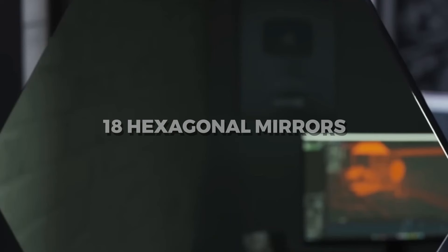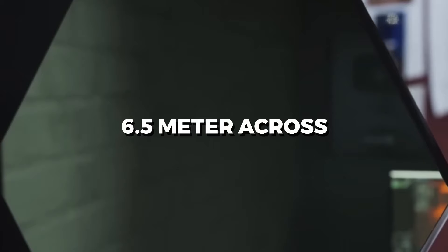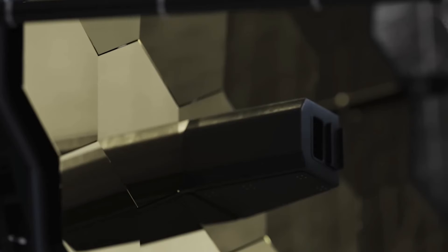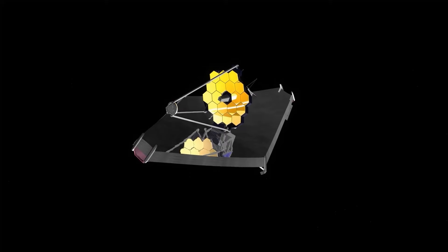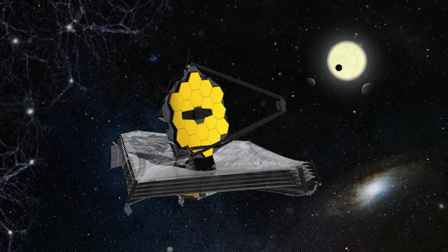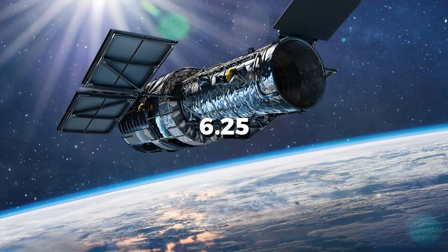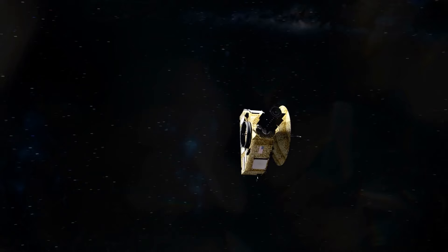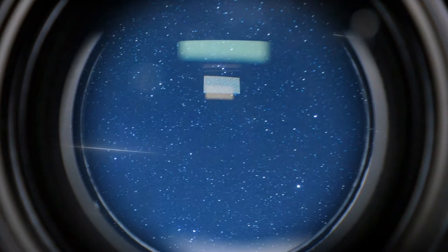JWST is designed differently from Hubble, with 18 hexagonal mirrors arranged in a honeycomb shape 6.5 meters across, compared to Hubble's spherical 2.4-meter diameter primary mirror. This means the James Webb Space Telescope has a surface area 6.25 times larger than the Hubble Space Telescope to allow it to collect more light.